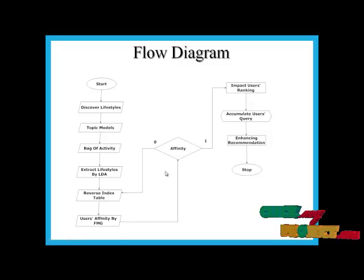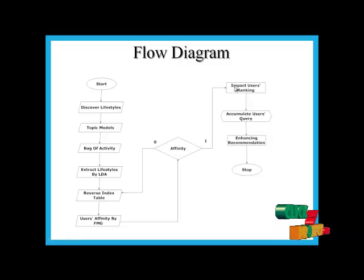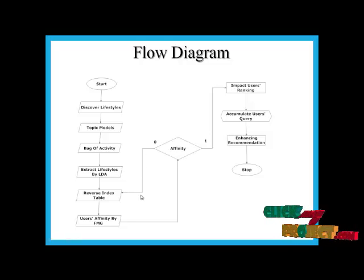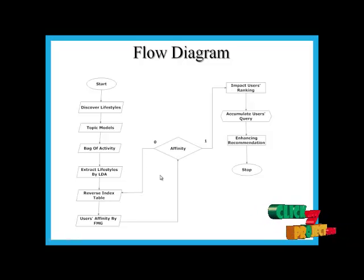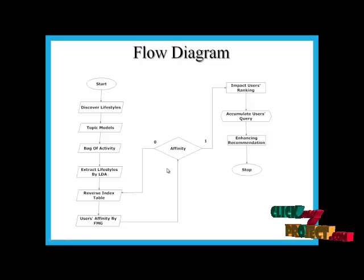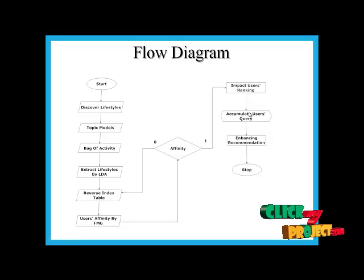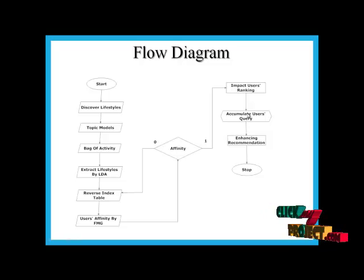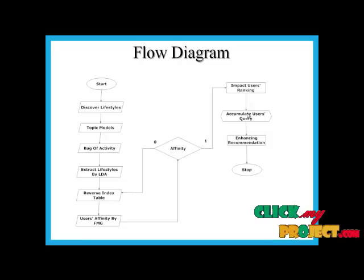If matching similarities are present, it proceeds to the user's impact; otherwise, it searches the database again. If the data are similar to the users, then the users are recommended as friends who have similar lifestyles with respect to the user's lifestyles.